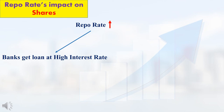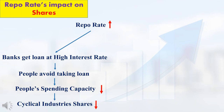So the bank can give loans to people at a high interest rate only. If the loan interest rate in the bank is increased, then people will avoid taking loans, so people's spending capacity will decrease. In simple, unnecessarily people will not take any loan, and people will not spend money on luxury items. So cyclical industries will get a bad impact.